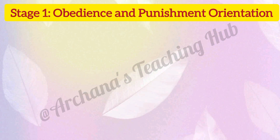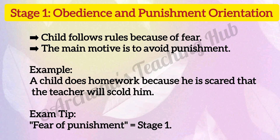Stage 1: Obedience and punishment orientation. The child follows rules because of fear. The main motive is to avoid punishment. For example, a child does homework because he is scared that the teacher will scold him. Key idea: fear of punishment equals Stage 1.